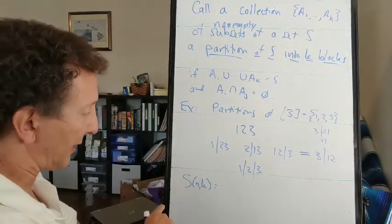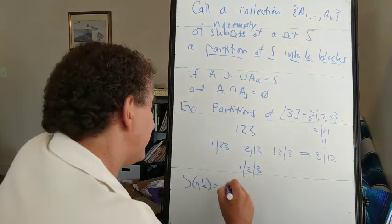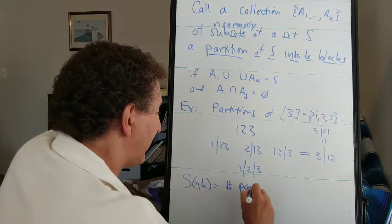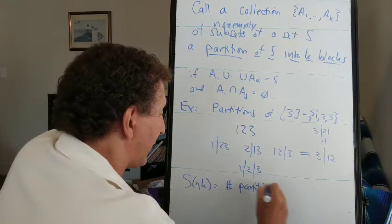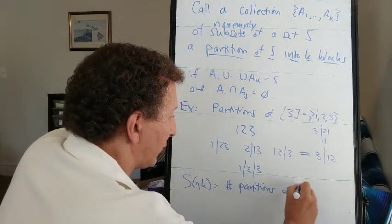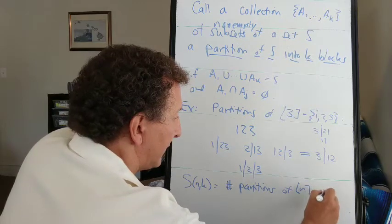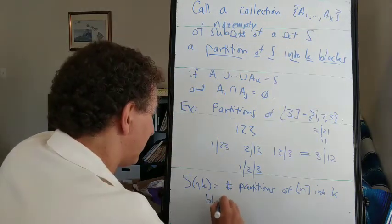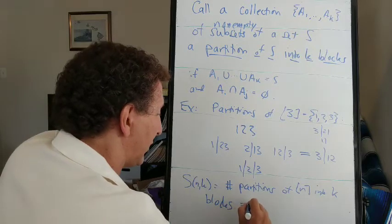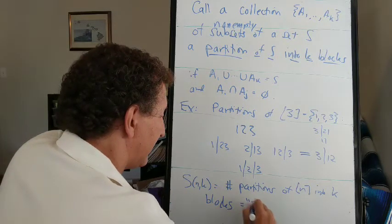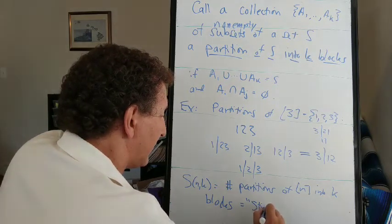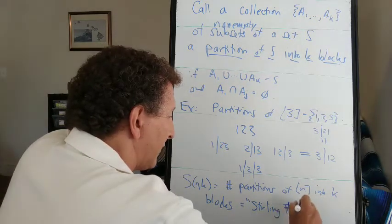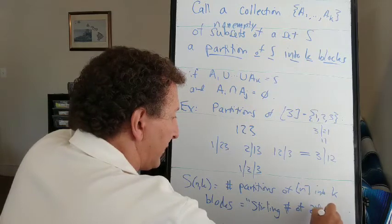We usually let capital S(n,k) be the number of partitions of 1 through n into k blocks. We call that the Stirling number of the second kind.